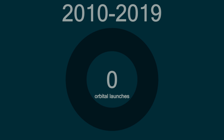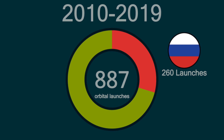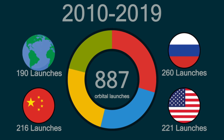Now that we've talked about the assumptions, we can look at the data. From 2010 to 2019, there were a total of 887 orbital launches, with Russia launching the most at 260 launches, followed closely by the United States with 221 launches, and China with 216 launches. The combined rest of the world had a total of 190 launches, so we can easily see that Russia had the most, with the United States and China closely behind.